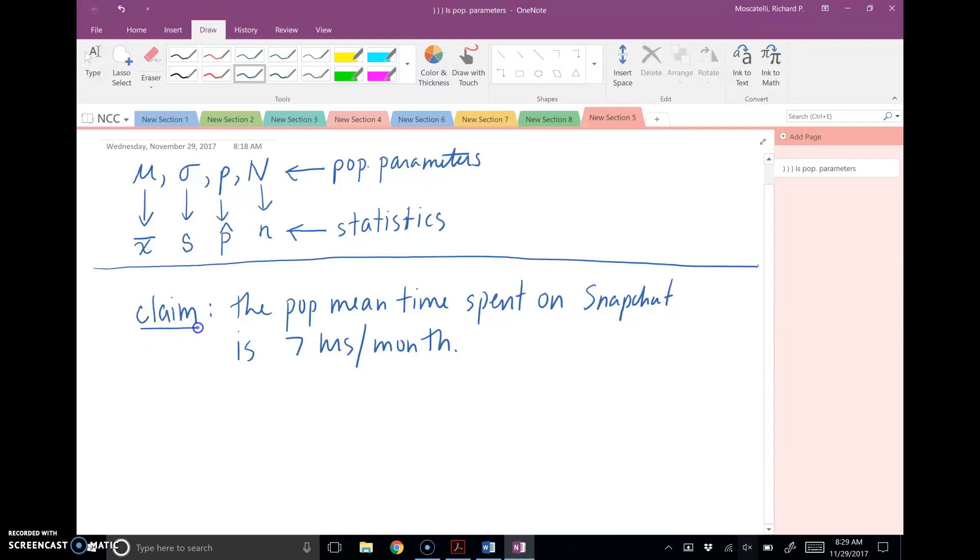All right, so think about that. In other words, the population mean, the symbol we use for that, that's mu, right? So we say this claim would be mu equals seven hours, symbolically.